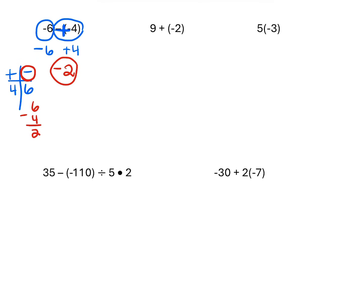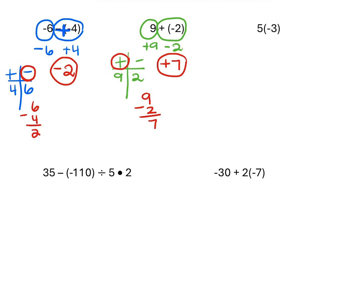The next problem says nine plus parentheses negative two. I'm adding and subtracting, so I know immediately I'm going to use my positive/negative table. I'll circle my numbers — starting at the back of the two, going all the way to the back of the nine. So nine is positive, two is negative — good versus evil, evil wins. Putting them in my table: nine is positive, two is negative. Positive wins because nine is larger. Different signs subtract: nine minus two is seven. The final answer is positive seven.